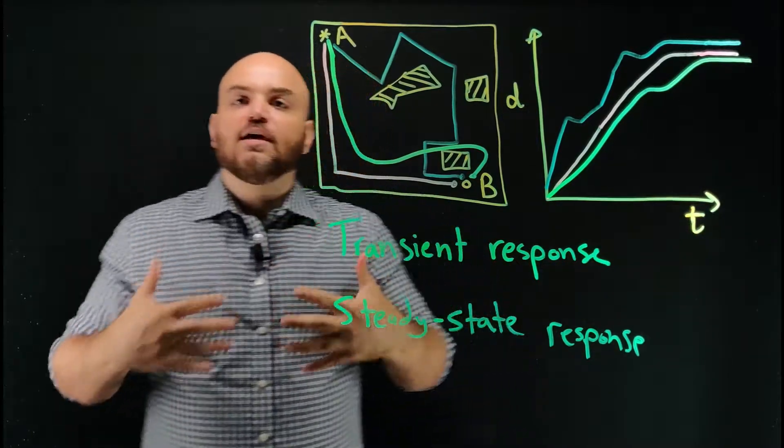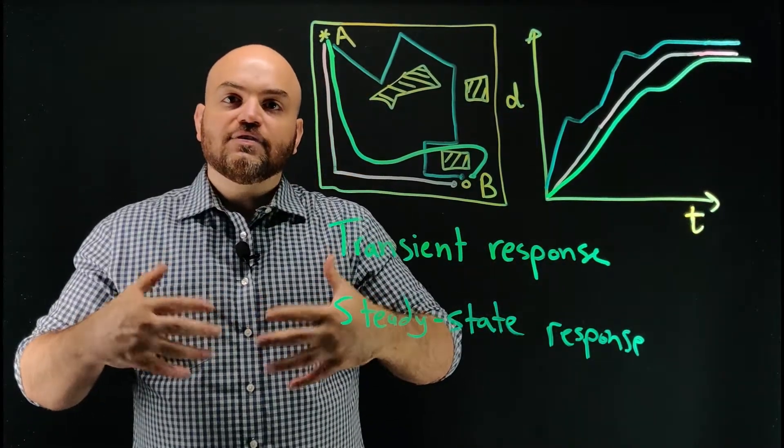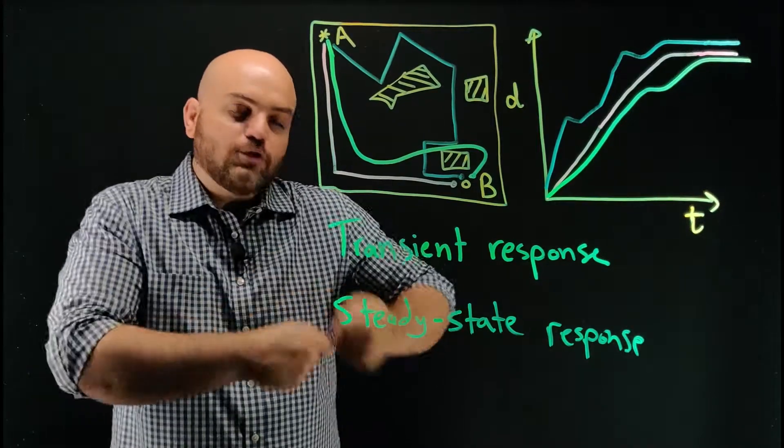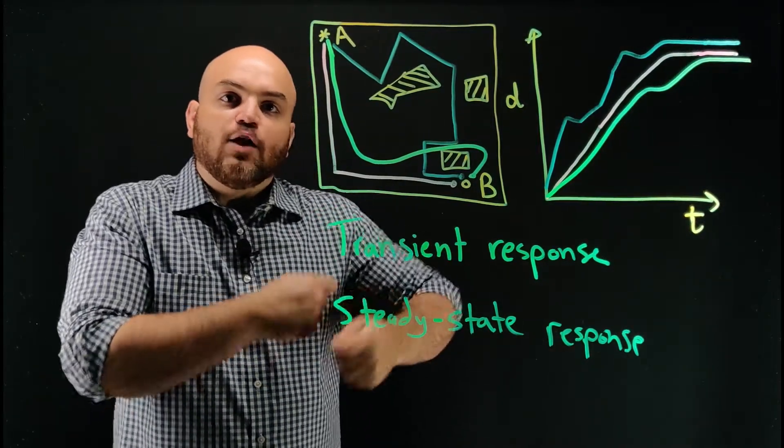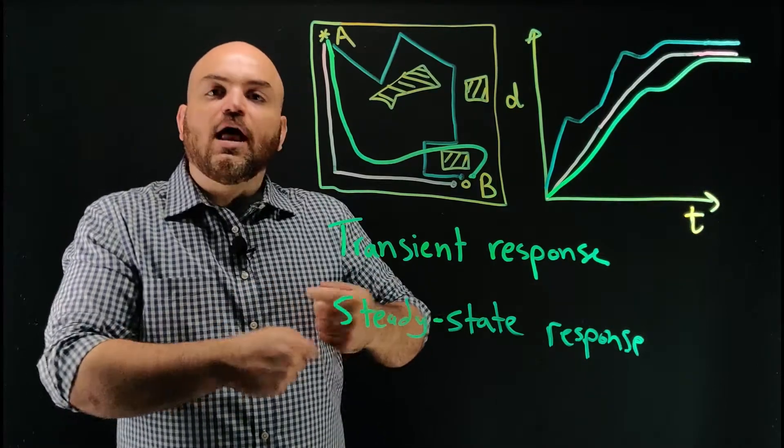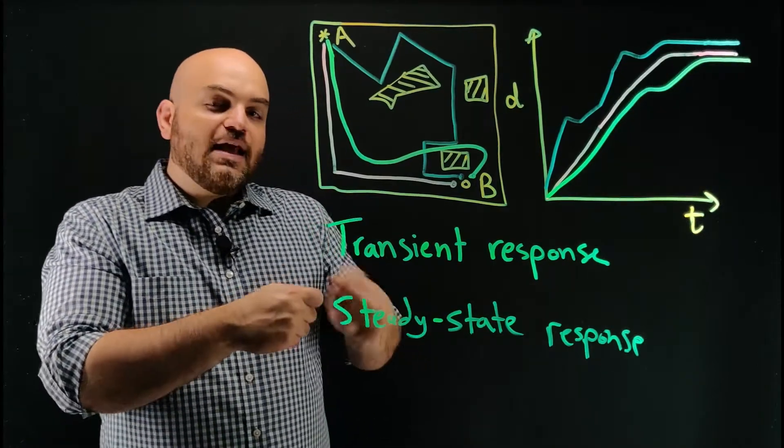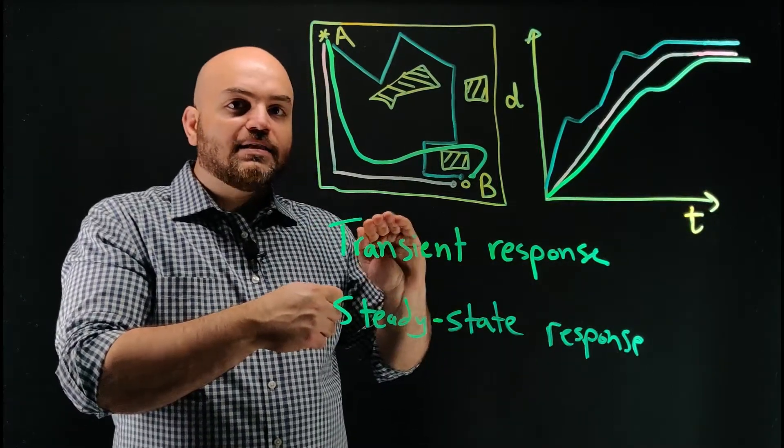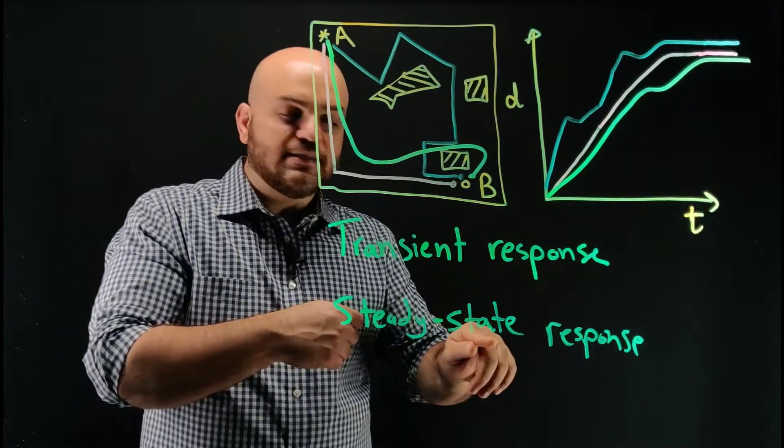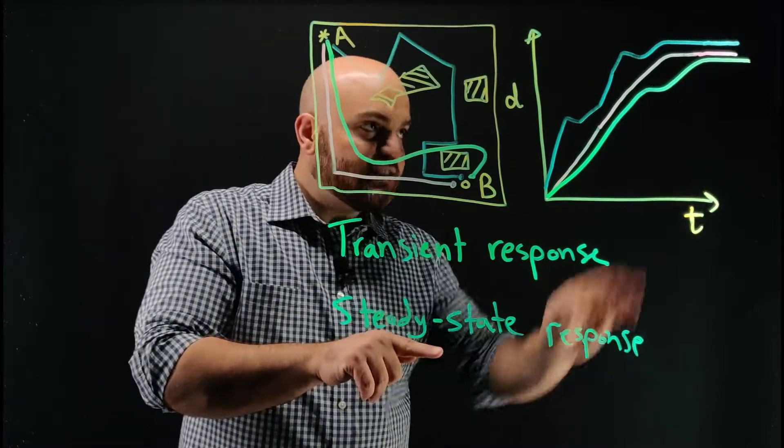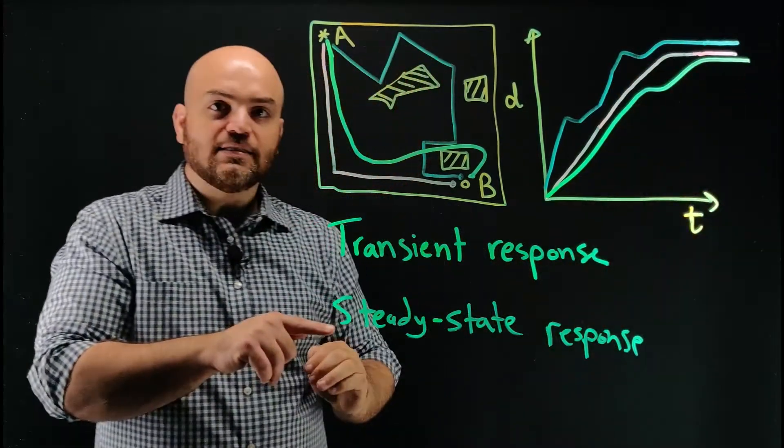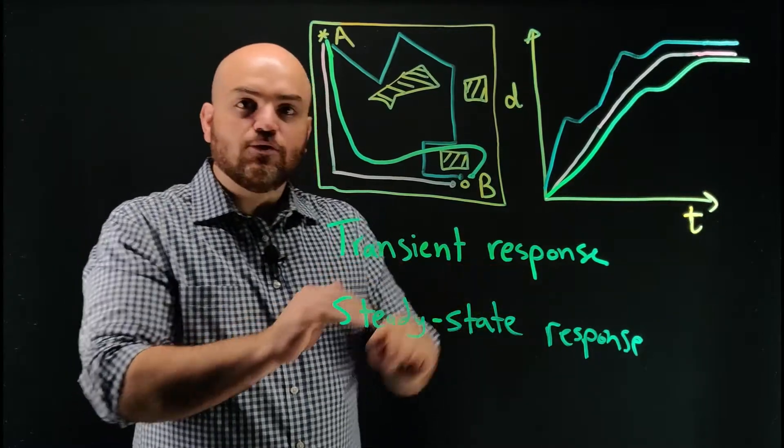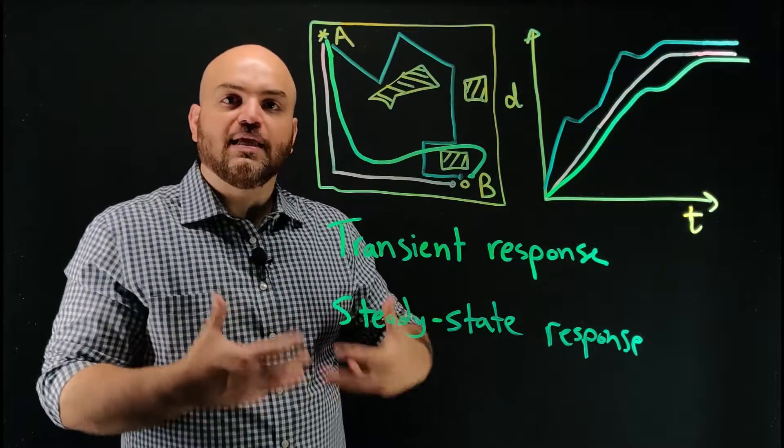So the way I think about it is that if a system is asked to change its state from one to another, it's going to start reacting to that. And over a short period of time, there's going to be a lot of changes in the system output. But then after that time has passed, the changes become minimal and the system goes into a state called steady state. So that's the steady state response after some time has passed and you got to a point where you're no longer changing a lot. And the transient response is when there's a lot of change happening in the system.